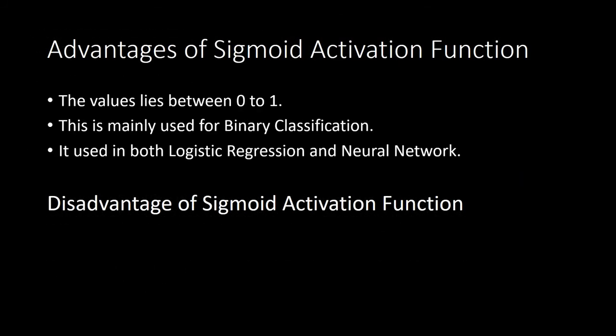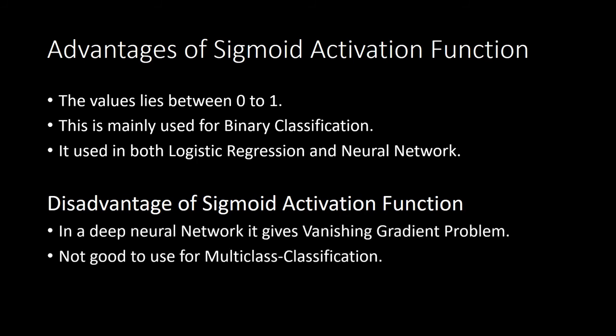Let's see the advantages and disadvantages of sigmoid. The advantages are: it is used in both logistic regression and neural networks, and it is mainly used for binary classification. The disadvantages are: in a deep neural network it gives the vanishing gradient problem, and it is not good to use for multi-class classification.